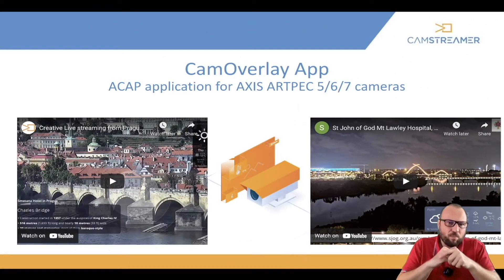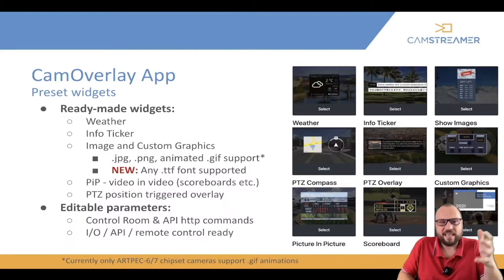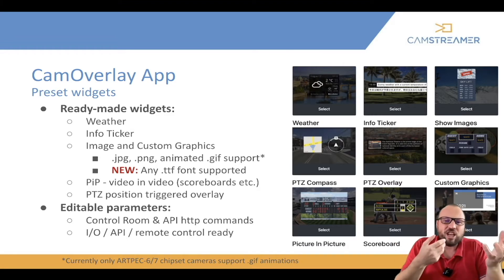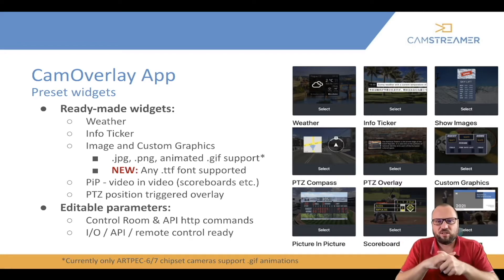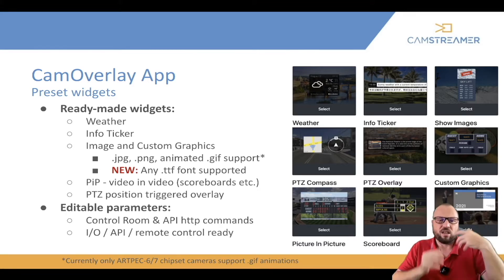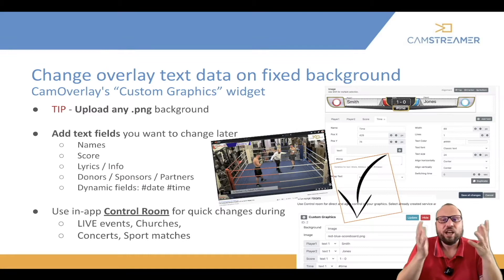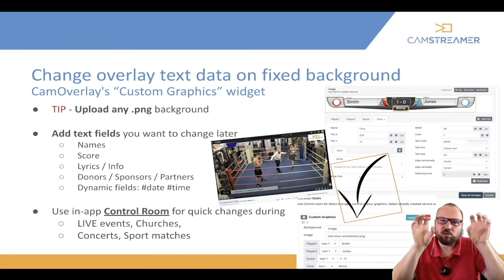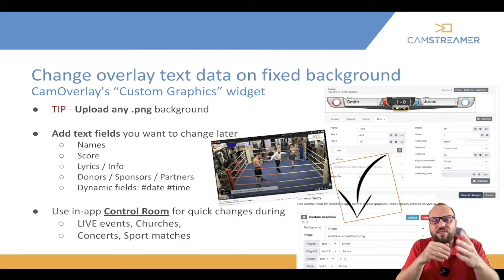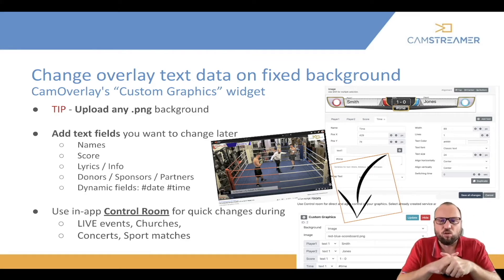The next app in our portfolio is CamOverlay. CamOverlay allows you to add a weather widget, display an info ticker, upload any JPEG, PNG, or animated GIF file to display any logo. Any TrueType font is supported. You can have picture-in-picture from another camera or from your computer. You can control the overlays, schedule them, trigger them via API, manually display and hide them. You can create scoreboards — upload the background, define the fields you want to edit on the fly, and then in something we call the Control Room you can easily change the values and the text is displayed.